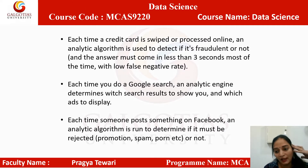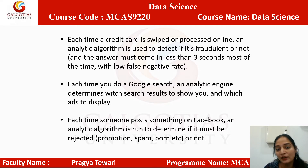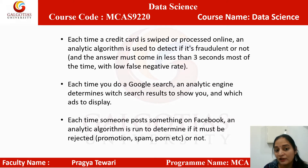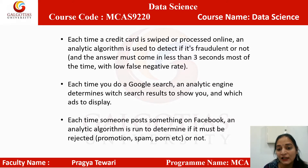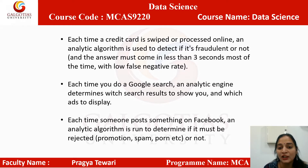Each time a credit card is swiped or processed online, an analytical algorithm is used to detect if it is fraudulent or not, and the answer must come in less than 3 seconds most of the time with low false negativity. Each time you do a Google search, an analytical engine determines which ads and advertisements to display.